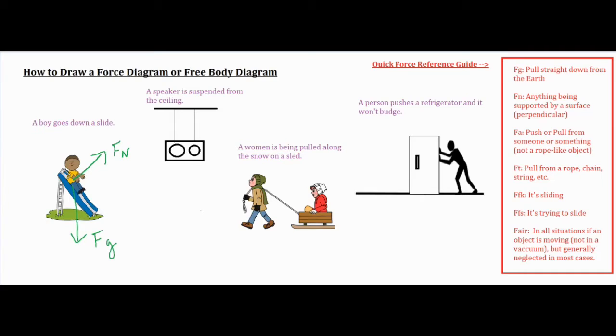Fa, applied force, a push or a pull from someone or something that's not a rope-like object. If it was rope-like, then we would call that Ft, the force of tension. I don't see anything in contact with the person besides the surface that he's sitting on, so there is no Fa or Ft.